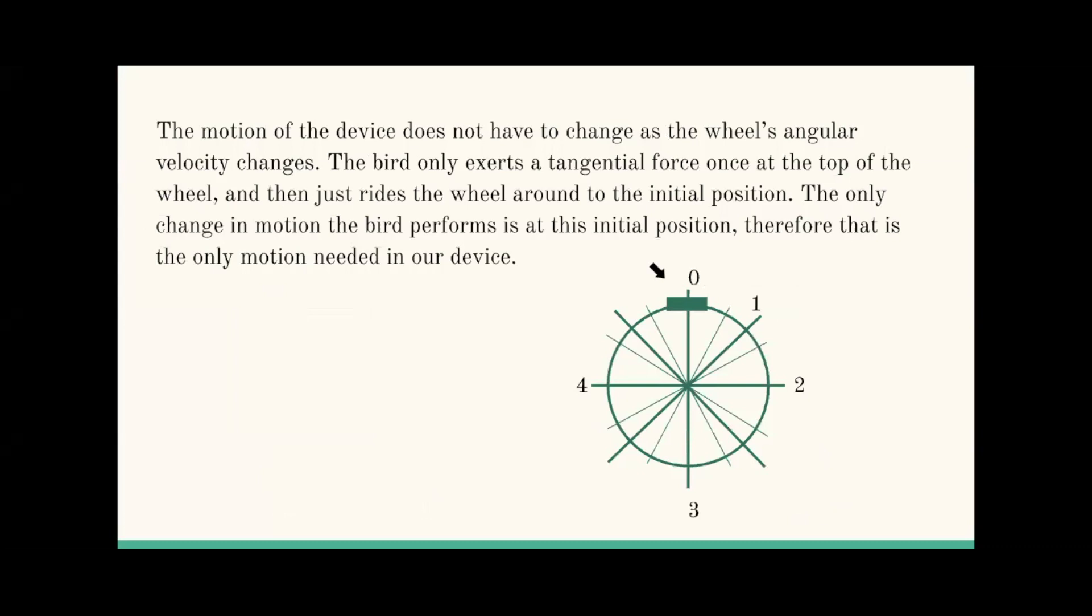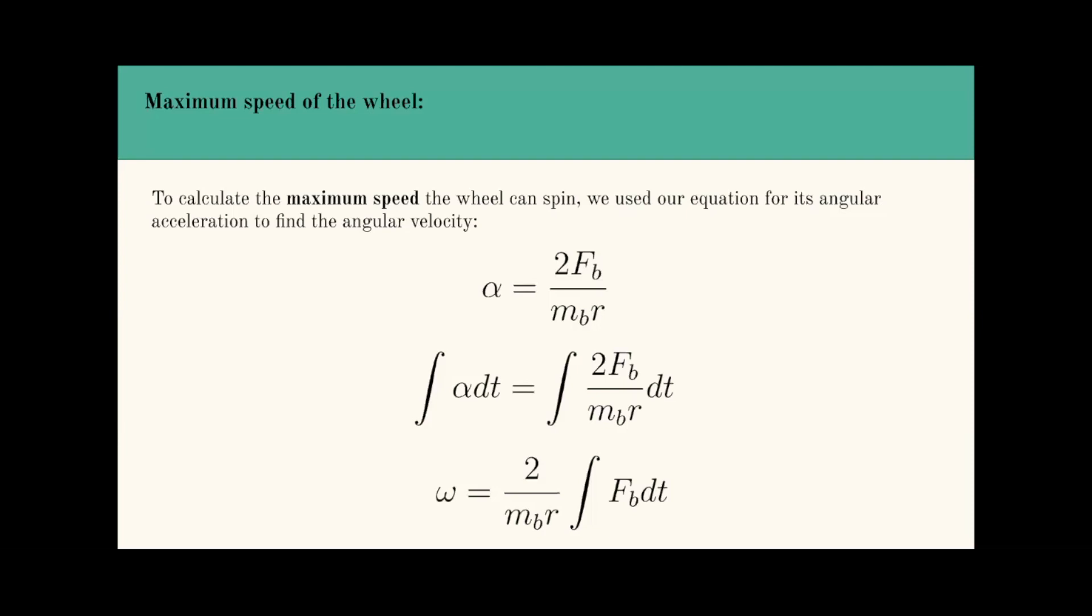The motion of the device does not have to change as the wheel's angular velocity changes. The bird only exerts a tangential force once at the top of the wheel and then just rides along the wheel. The only change in motion the bird performs is at its initial position. Therefore, that's the only motion we need on our device. In this graph, we pointed out the initial position or zero, and we also calculated the maximum speed of the wheel.